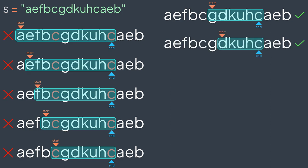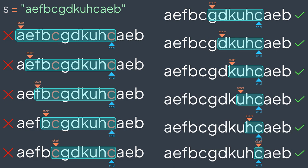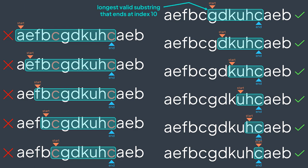Then index six: no repeating, valid substring of length five; then seven: length four, and so on. Among all these substrings, the longest valid one that ends at index 10 is the one that starts just after the repeated character. We deduce that if s[end] is repeated, to get the longest valid substring we start just after the repeated character. So: if there are no repeating characters, we start at zero; otherwise, if s[end] is repeated before, we start just after the repeated character.